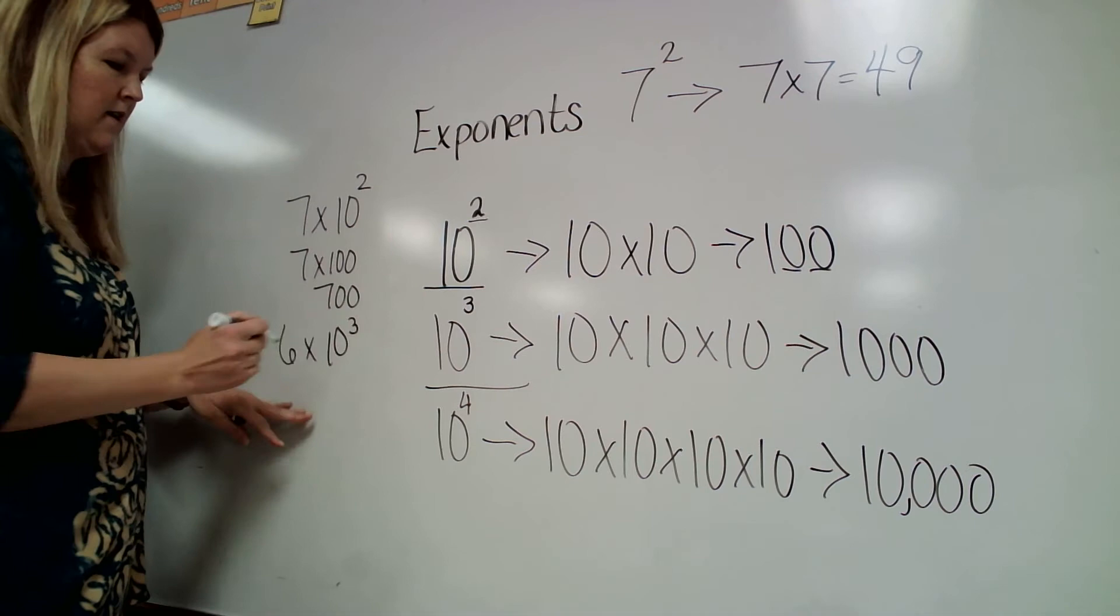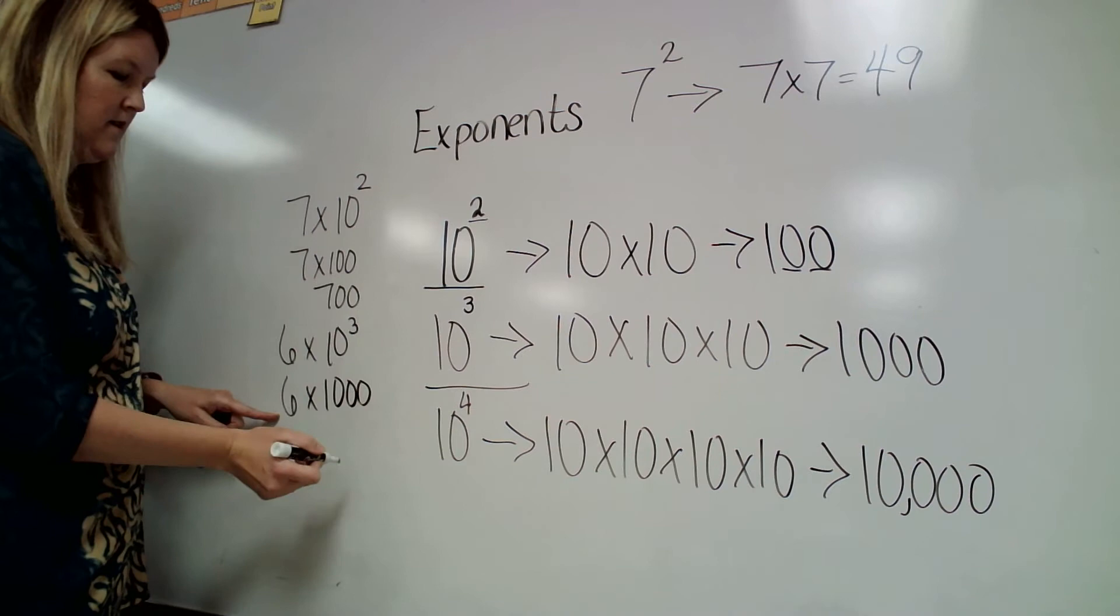If I said 6 times 10 to the 3rd power, that's the same thing as multiplying 6 times 1000. So that would give me 6000.